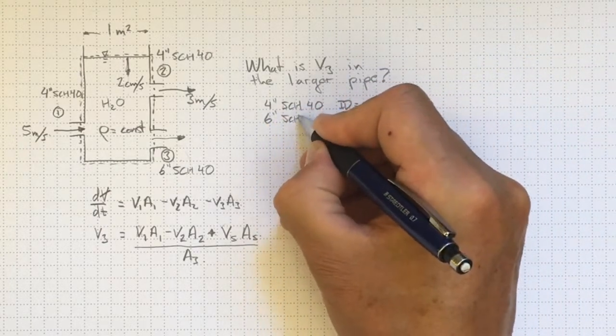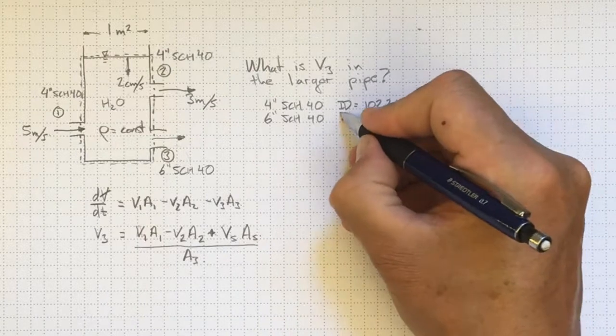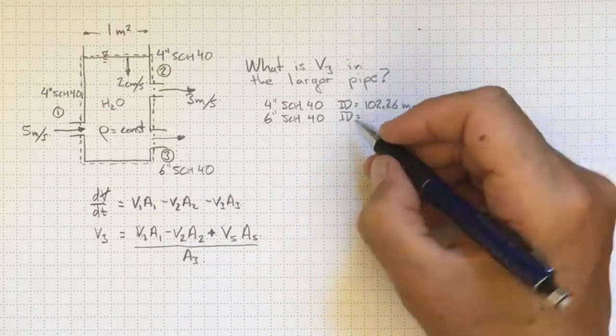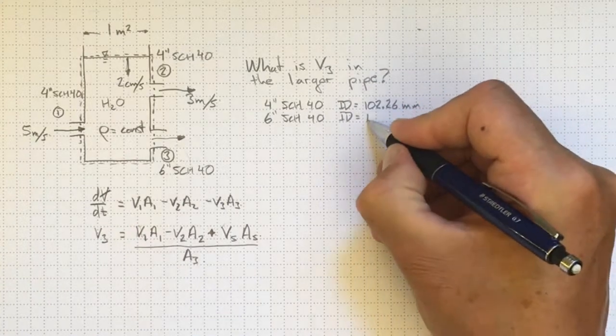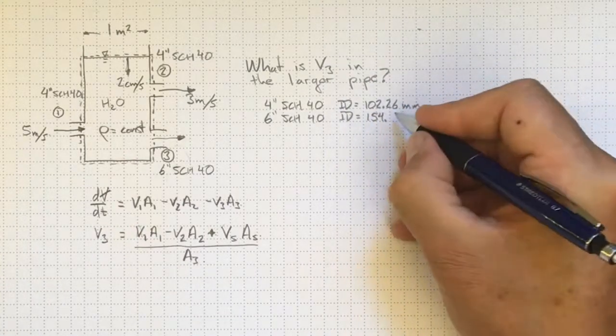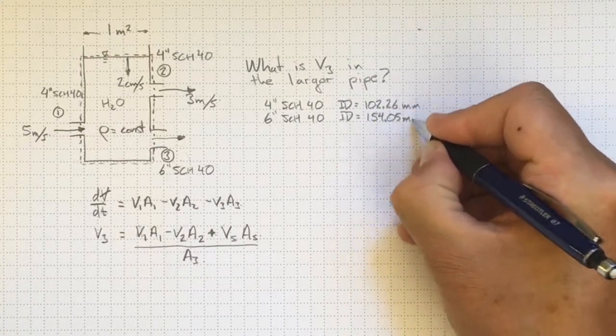6 inch schedule 40 has an inside diameter, I got this by going on the web and looking up piping tables, of 154.05 millimeters.